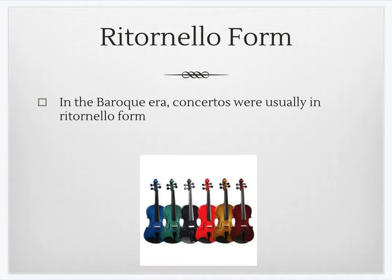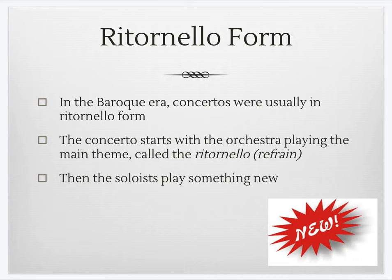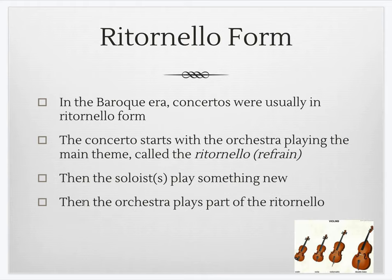What Vivaldi did for the concerto was create a standard formula of three movements — fast, slow, fast — and he created the idea of Ritornello form. The Ritornello form starts with several themes put together; the orchestra plays this main theme that can be broken into smaller pieces, called the Ritornello, or refrain. We hear that Ritornello come back many times — sometimes fully, sometimes just a snippet — but whenever the orchestra plays, they play material borrowed from the Ritornello. After the orchestra opens, the soloist plays something new, then the orchestra plays part of the Ritornello in what we call the tutti section.